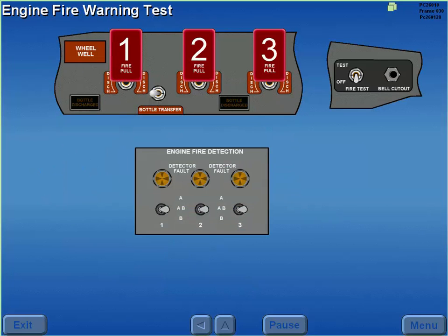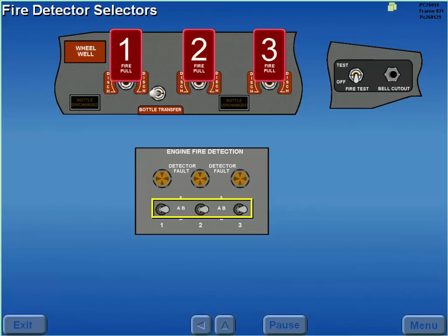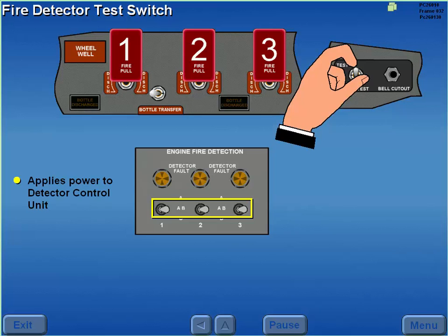Prior to the first flight of the day, a fire warning test is performed. The fire detector selectors are positioned to A-B for the fire warning test. Moving the fire detector test switch to test applies power to the detector elements.